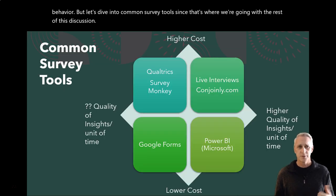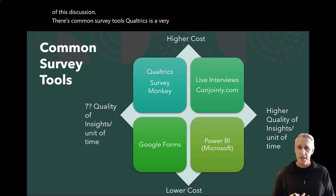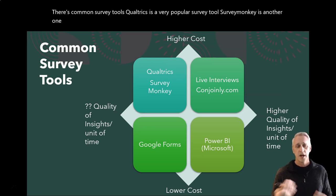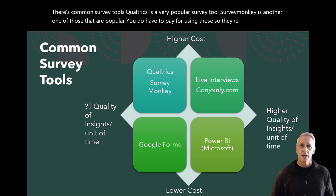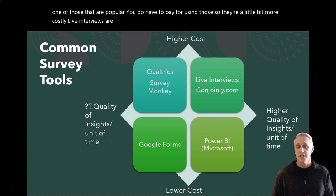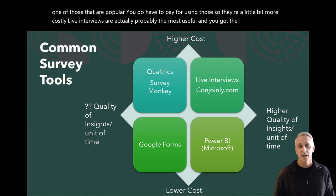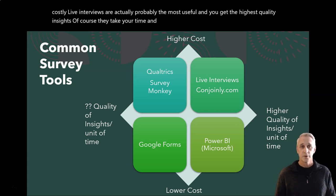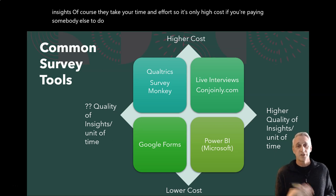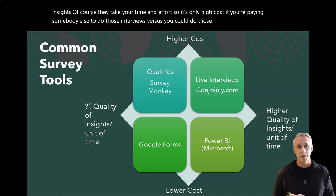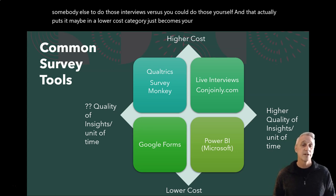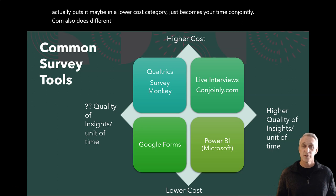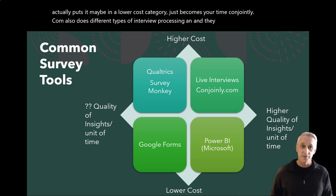Let's dive into common survey tools. Qualtrics is a very popular survey tool. SurveyMonkey is another popular one. You do have to pay for using those, so they're a little more costly. Live interviews are actually probably the most useful and you get the highest quality insights. Of course, they take your time and effort, but it's only high cost if you're paying somebody else — you could do those yourself, which makes it lower cost. Conjointly.com also does different types of interview processing and provides a whole bunch of different services.